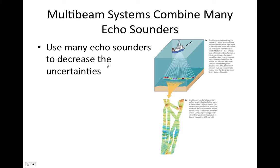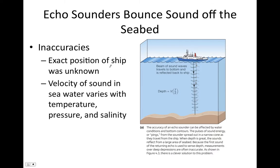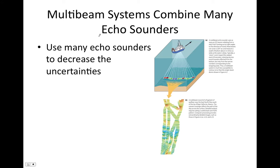An advancement on echo soundings — because echo soundings still only measure the depth at one point where the sound wave bounces off the seafloor — is multi-beam systems, which are the combination of many echo sounders. Instead of sending one sound wave straight down, a multi-beam system sends many sound waves in different directions. They travel down and bounce off the seafloor back up to the ship, so instead of measuring the depth at a single point beneath the ship, we measure the depth along a line under the ship.